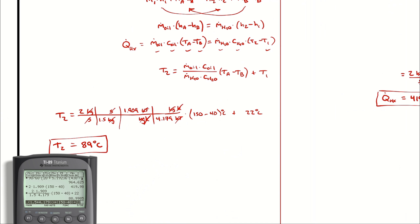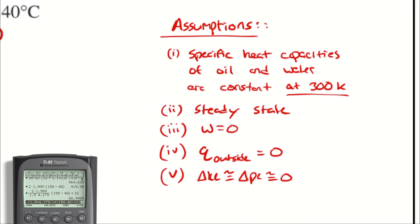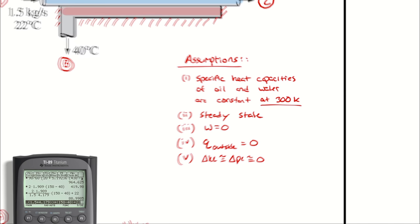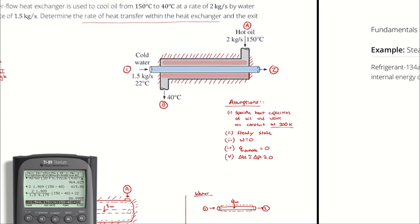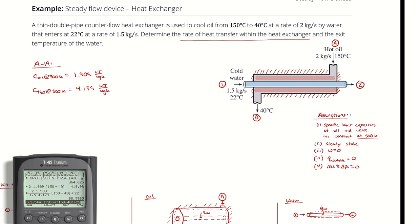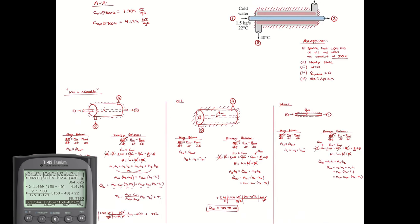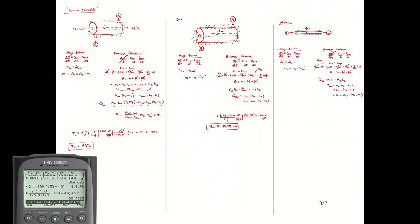Since the water pressure is likely close to atmospheric or higher, 89 degrees Celsius is not high enough to raise concern about a phase change. If the exit temperature had been something like 120 degrees Celsius, there would be a possibility of a phase change occurring, which would invalidate the constant specific heat assumption and require lookup of hF values and pressure information. Since we don't have to worry about it here, the final answers are: heat exchanged approximately 420 kilowatts, and exit water temperature approximately 89 degrees Celsius.